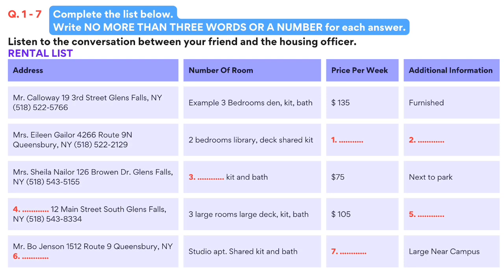Hi, we have been looking over your listing of apartments for rent and we have a few questions about a couple of the apartments. Can you help us? Sure, this is our most recent listing. What would you like to know? Well, we were first wondering about the house on 3rd Street. We can see that it is furnished and rents for $135 a week, but can you tell us how many bedrooms it has? Let's see, in addition to the den, it has three bedrooms.